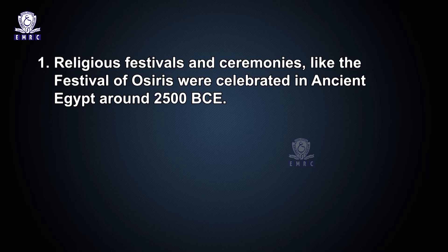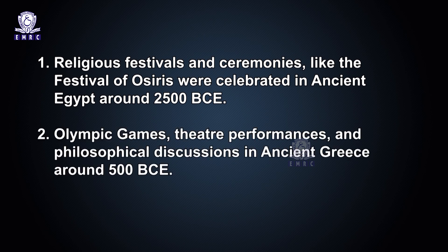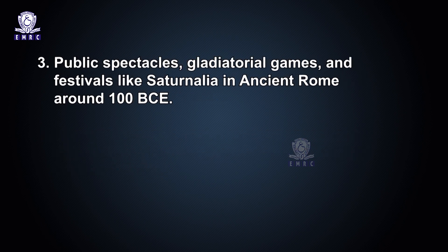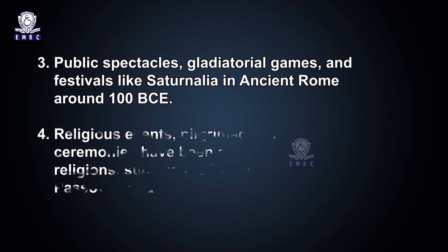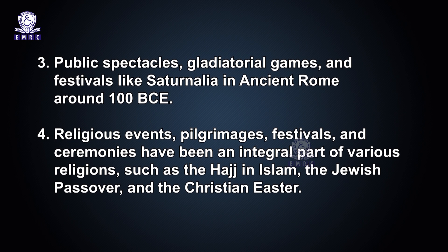The origin of events dates back to ancient times with evidences of festivals, ceremonies and gatherings in various cultures. Religious festivals and ceremonies like the Festival of Osiris were celebrated in ancient Egypt around 2500 BCE. Olympic games, theater performances and philosophical discussions took place in ancient Greece around 500 BCE. Public spectacles, gladiator games and festivals like Saturnalia occurred in ancient Rome around 100 BCE. Religious events, pilgrimages, festivals and ceremonies have been integral to various religions such as the Hajj in Islam, the Jewish Passover and the Christian Easter.